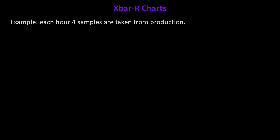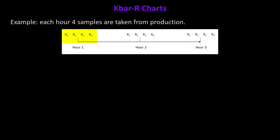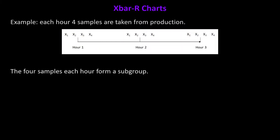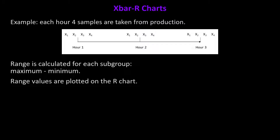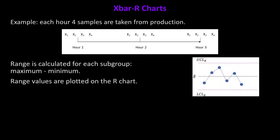Let's take a look at X-bar and R-charts. Suppose that each hour, four samples are taken from production — four samples at hour one, hour two, and hour three. You take these four samples each hour and form a subgroup. Each sample is measured. Then the range is calculated for each subgroup — simply the maximum minus the minimum. You take those range values and plot them on the range chart.